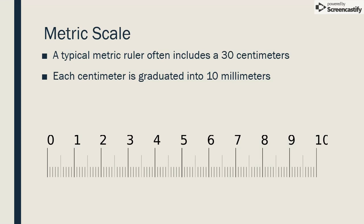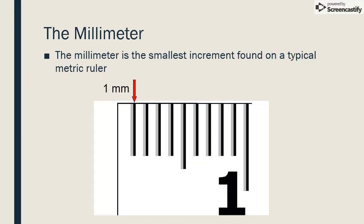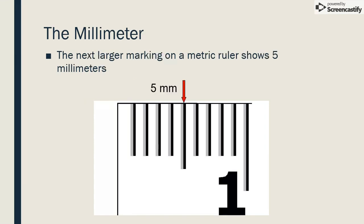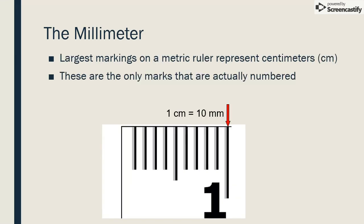A typical metric ruler often includes thirty centimeters. Each centimeter is graduated into ten millimeters. The millimeter is the smallest increment found on a typical metric ruler. The next longer line on a metric ruler shows five millimeters, and the longest lines represent full centimeters. These are the only marks that are actually numbered.